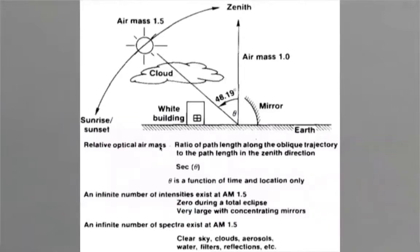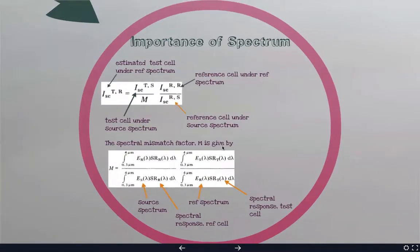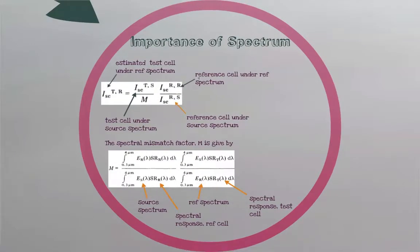We know that air mass is also important. AM1 refers to directly overhead, AM1.5 is the standard we generally use. The secant of theta — 1/cos(θ) — represents the path length of light through the atmosphere. Intensities and spectrum can vary drastically based on clouds, pollution, etc.